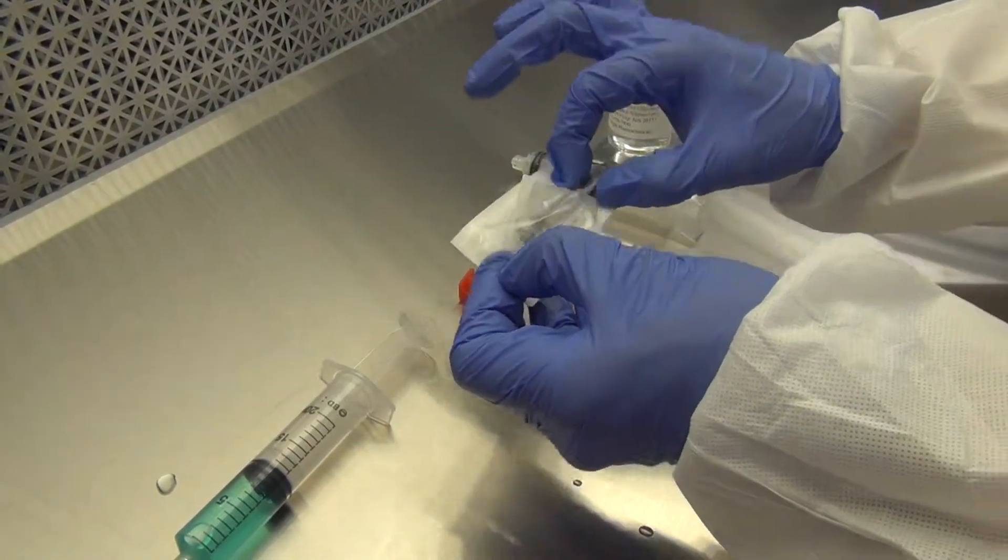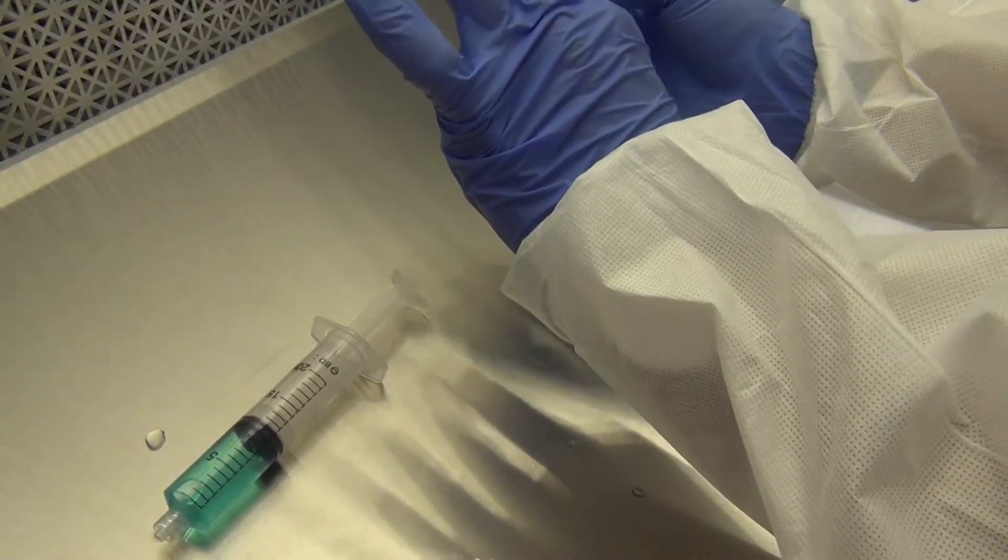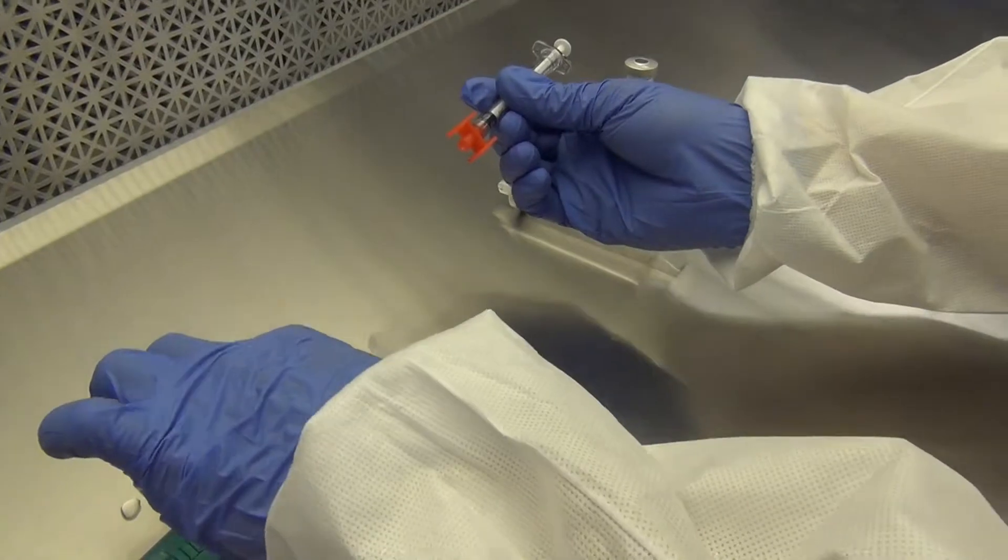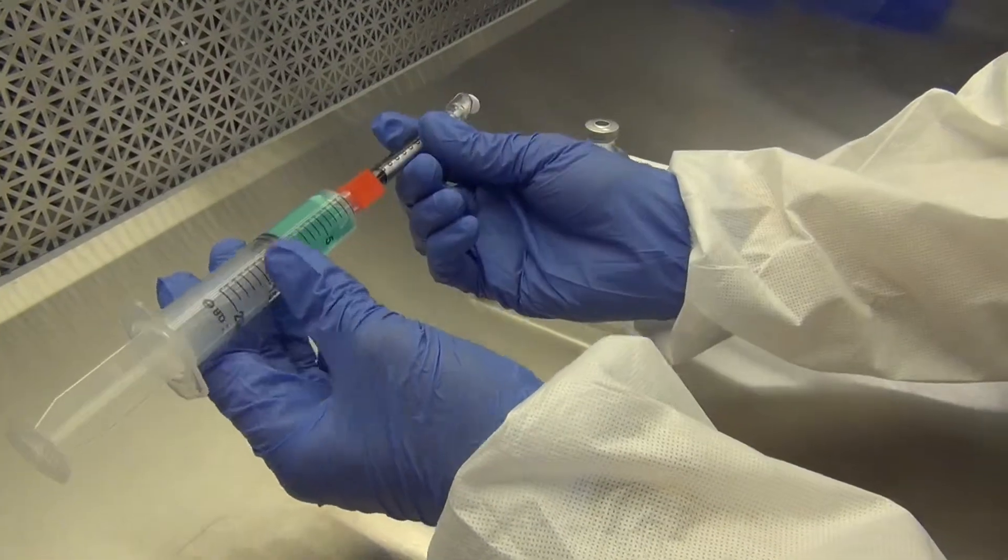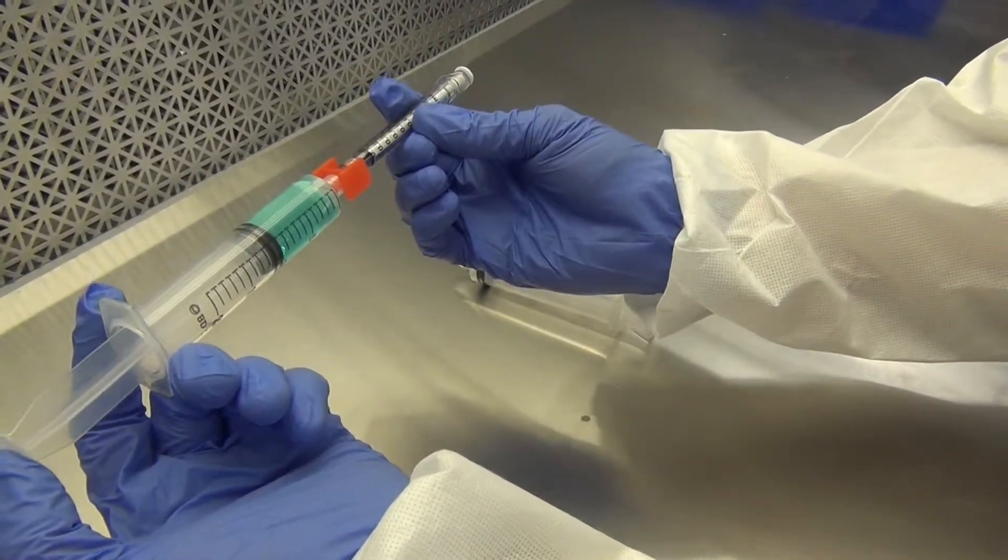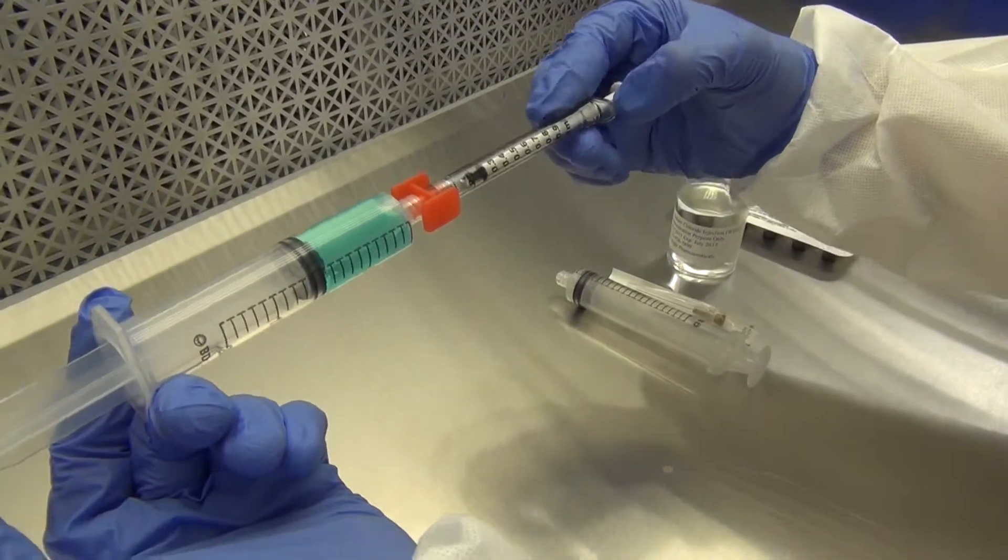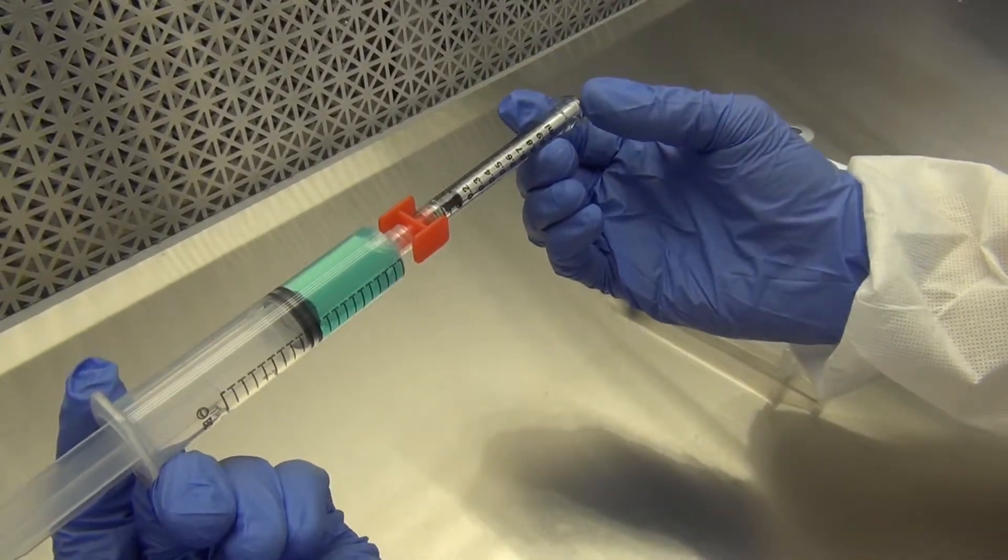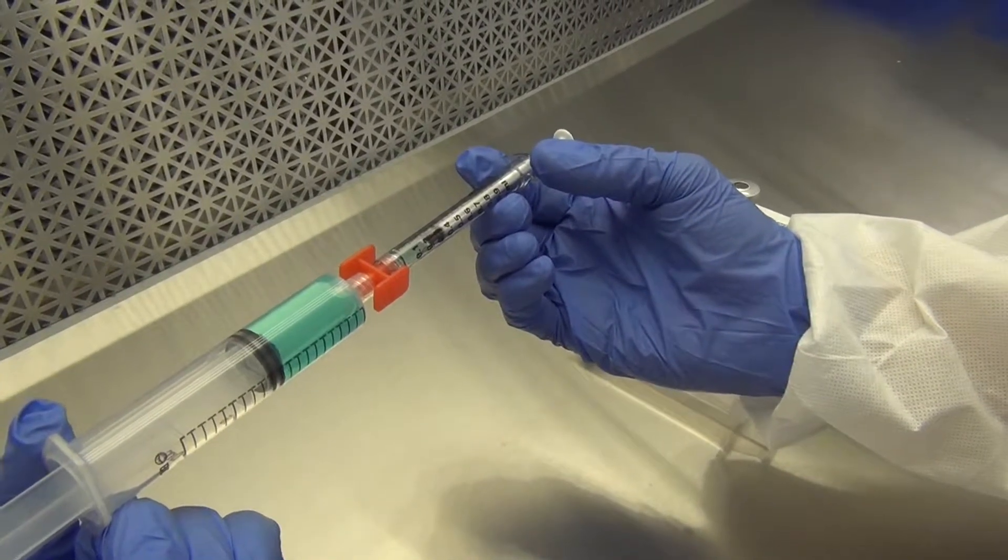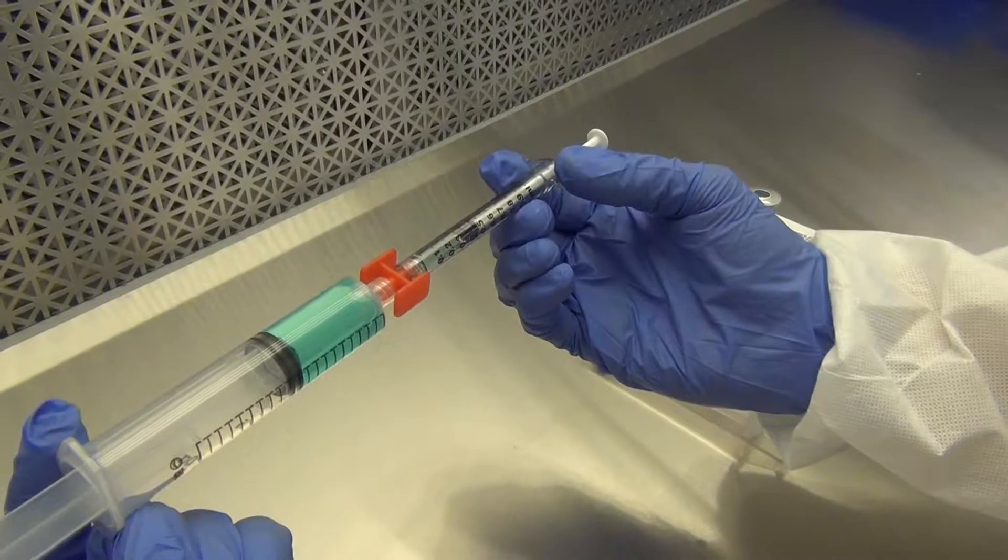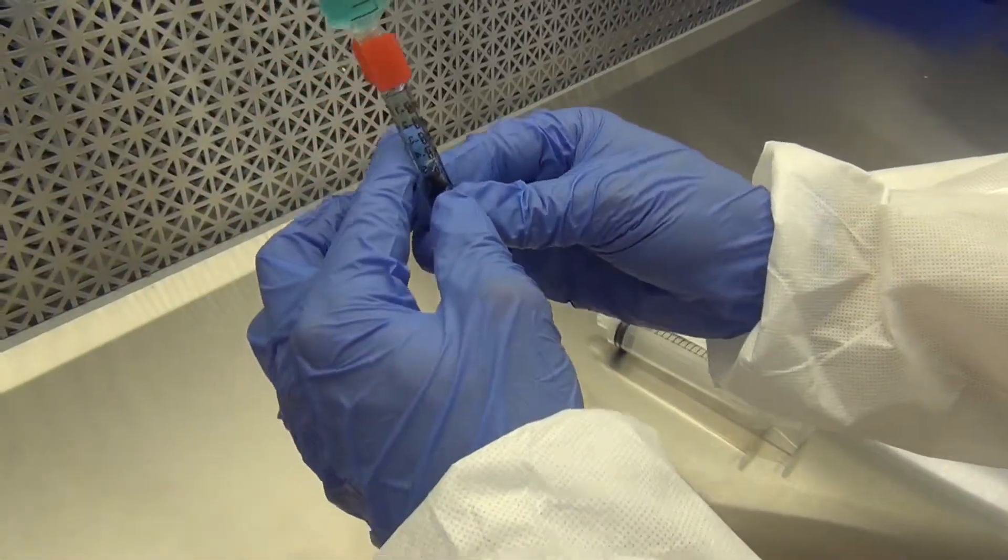Remove the 1 milliliter syringe from the package and affix the lure lock to the syringe. Go ahead and affix the 20 milliliter syringe with your diluted solution to the other end. Withdraw the amount of solution that is needed to perform the second dilution. In this case it is 0.5 milliliters. You may want to remove a little extra so you can get rid of any air bubbles.